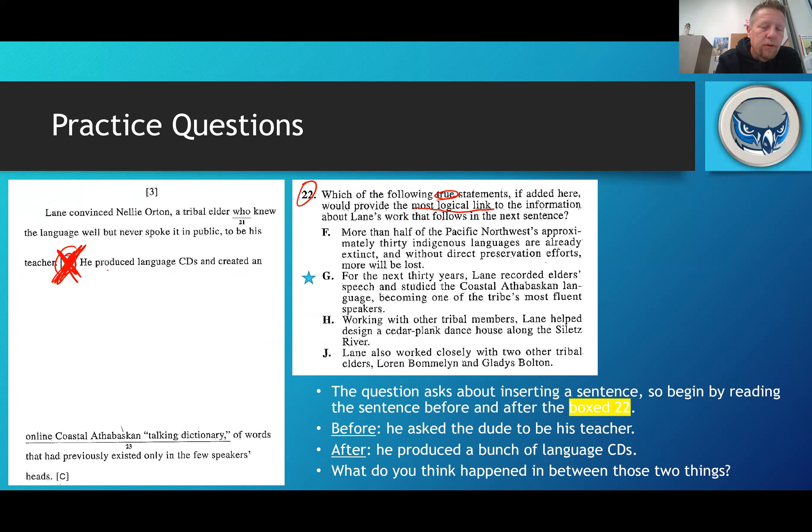So our sentence prior to that says Lane convinced Nellie Orton, a tribal elder who knew the language but never spoke it in public, to be his teacher. Okay, so the dude found someone to teach him the language. And then the next sentence is he produced language CDs and created an online coastal Athabascan talking dictionary. So what happened between he found someone to teach him and he created a bunch of CDs? Well logically we come up with G. For the next 30 years Lane recorded elder speech and studied the coastal Athabascan language becoming one of the tribe's most fluent speakers.